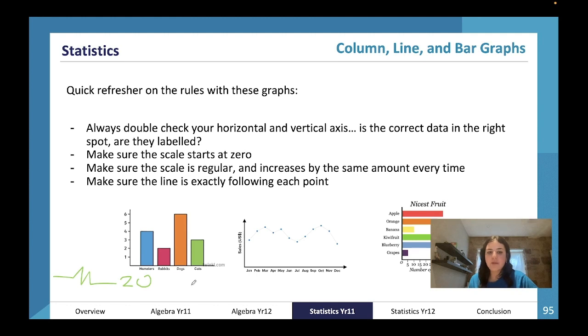It has to be the same increase between each piece of information. You cannot change your scale halfway through. The two axes can have different scales—this one could be up by one number each time, this one could be up by 50 numbers each time—but they have to be the same on each axis. When you draw your lines, try to use a ruler and make sure they're exactly following each point.